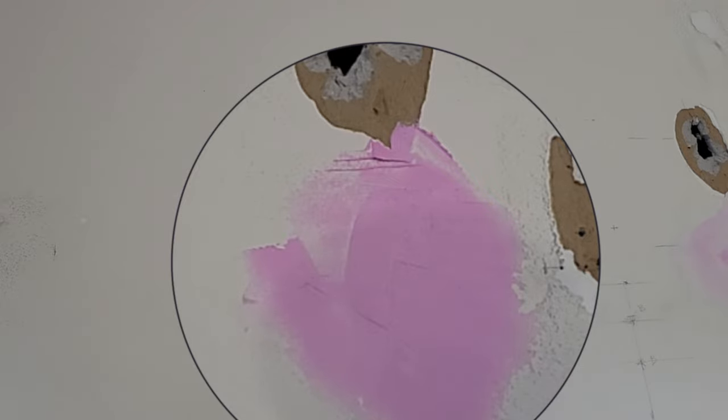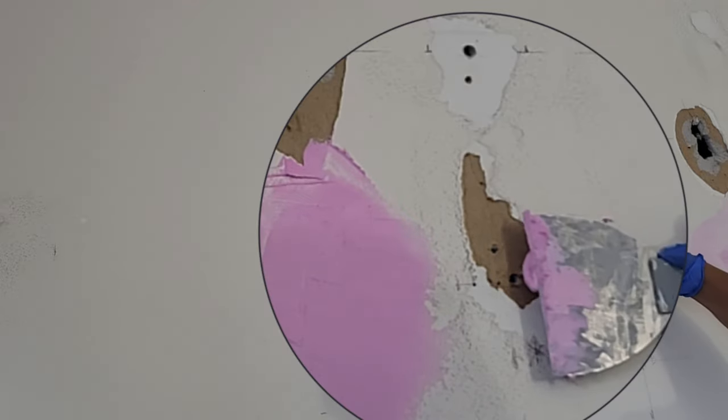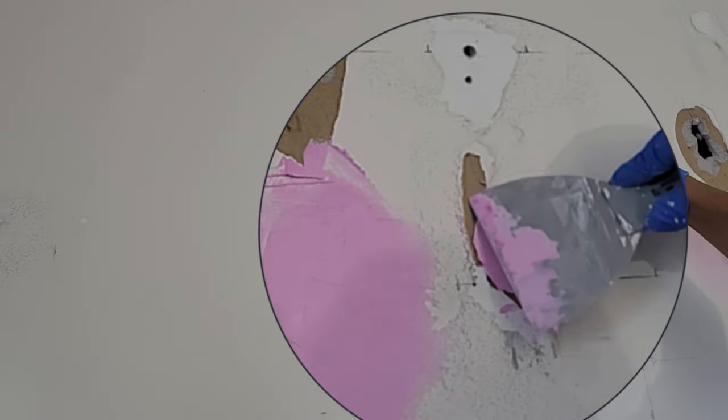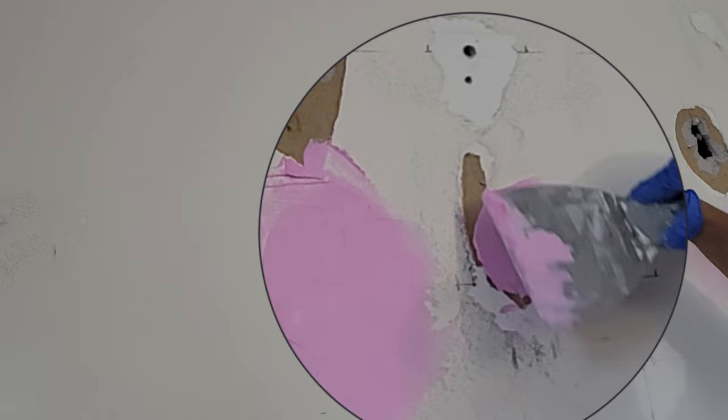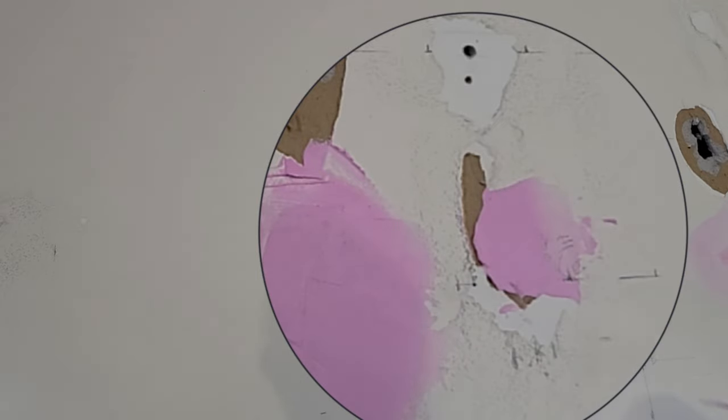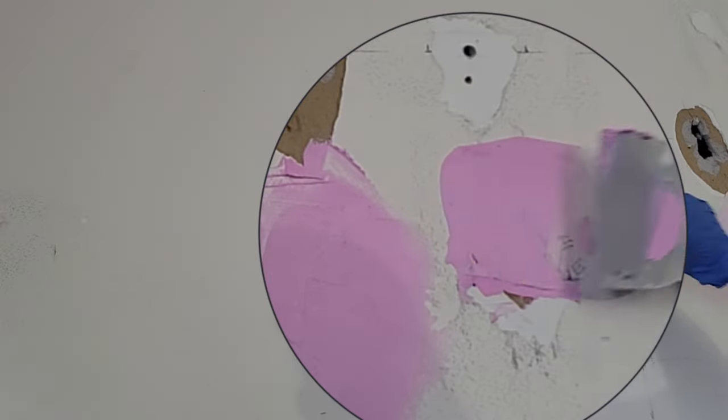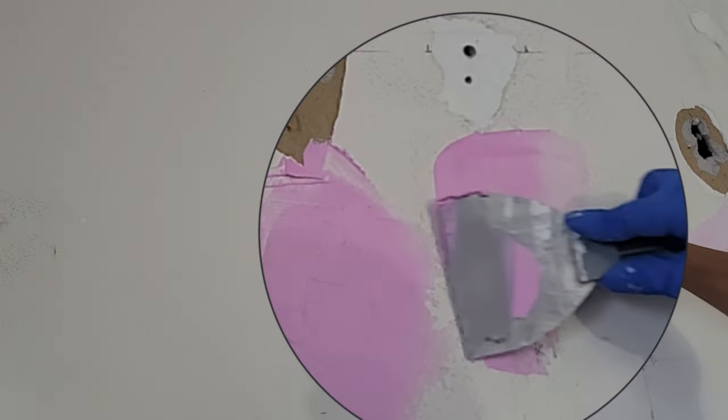All right, so now we're going to go ahead and cover this. This is not actually a small hole, but you want to go ahead and also cover this part right here, which is actually where the paint got peeled.